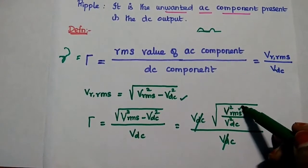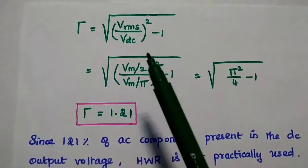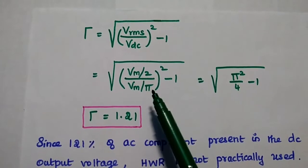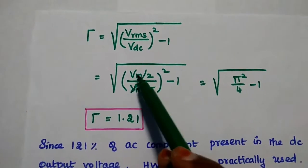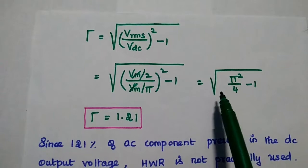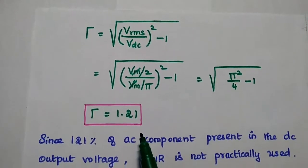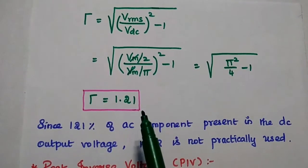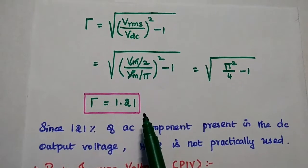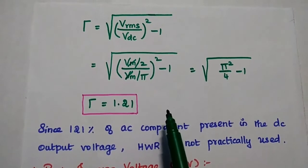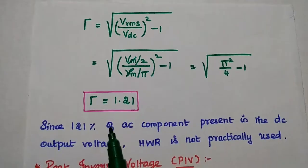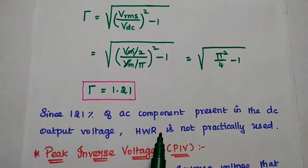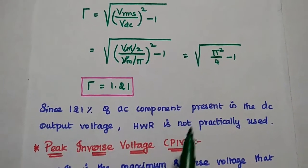Substituting Vrms = Vm/2 and Vdc = Vm/π into the ripple factor formula, we simplify to get γ = √(π²/4 − 1) = 1.21. This means 121% of AC component is present in the DC output. Since 121% of AC component is present in the DC output, this half-wave rectifier is not practically used in many applications.